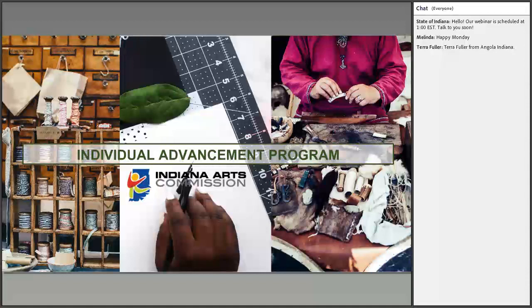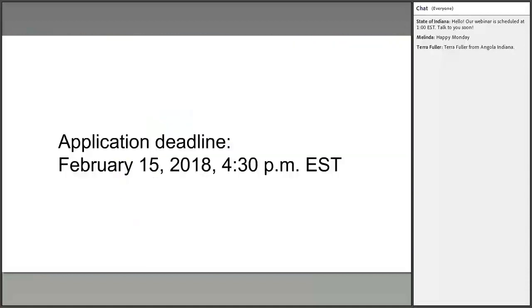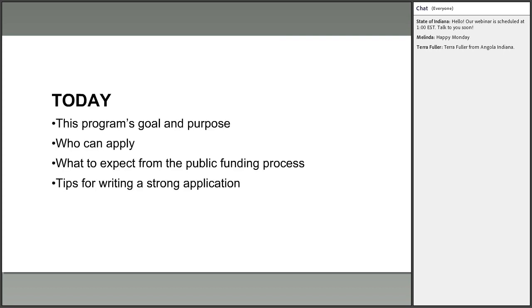The Individual Advancement Program is a grant program meant to support the career development of individual artists in Indiana. Applications for FY19 — fiscal year 2019 — are now open and are due February 15th, 2018 at 4:30 p.m. Eastern Time. Today we'll cover the program's goals, who can apply, what to expect from the public funding process, and tips for writing a strong application.